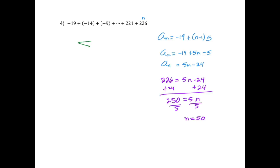So again, I'm going to write my notation. I'm going to go from n equals 1 to 50. And now I'm just going to write my equation. Remember that my equation is this one. So 5n minus 24. That's it.